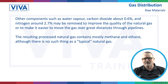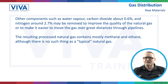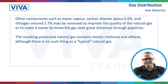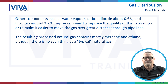Other components such as water vapour and carbon dioxide are only about 0.6%, and nitrogen is about 2.7%. These may be removed to improve the quality of the natural gas — to improve its calorific value, which we'll talk about in a later presentation — and because it transports a lot easier without those water vapours and things, which is what we need to do to get it into your houses.